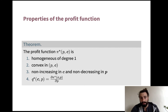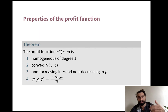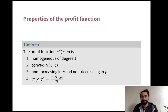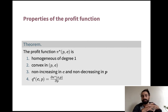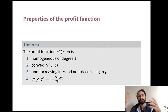Homogeneous degree one means that if I multiply both the price and the costs by some fixed scale, the resulting profit just scales up by that same fixed scale. Moving from dollars to cents multiplies profit by a hundred — profit is denominated in the same currency as the prices and costs. Once you realize that x* is homogeneous degree zero and you write down profit as revenue minus costs, you see a t appears on both terms and just pulls out front.